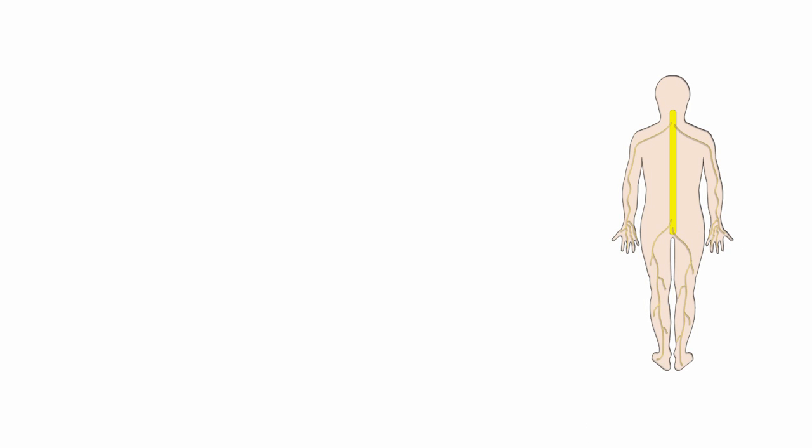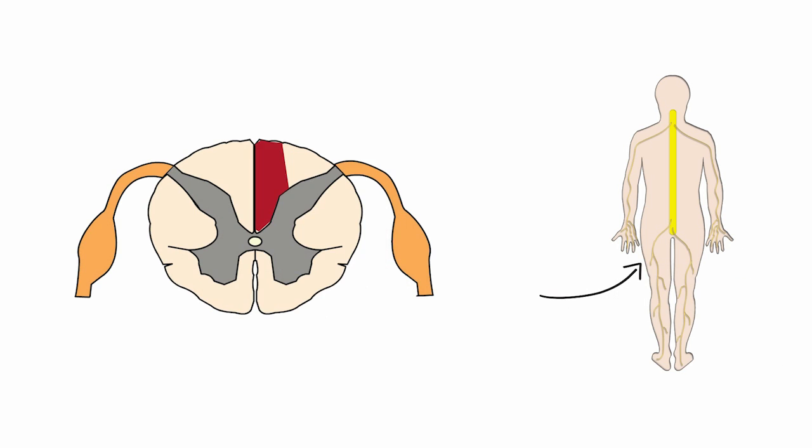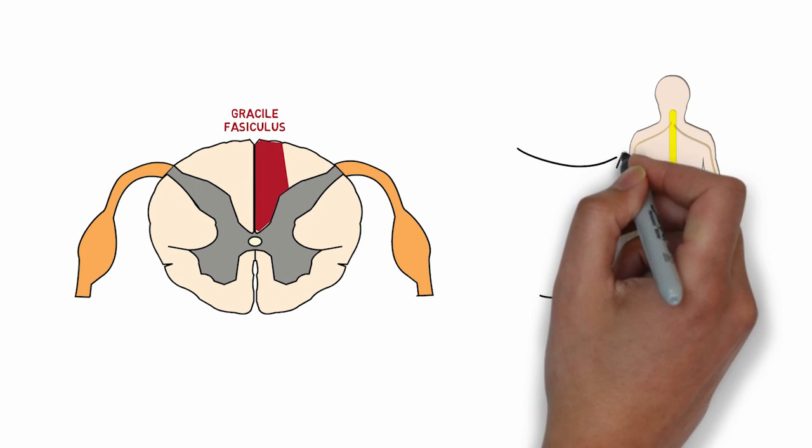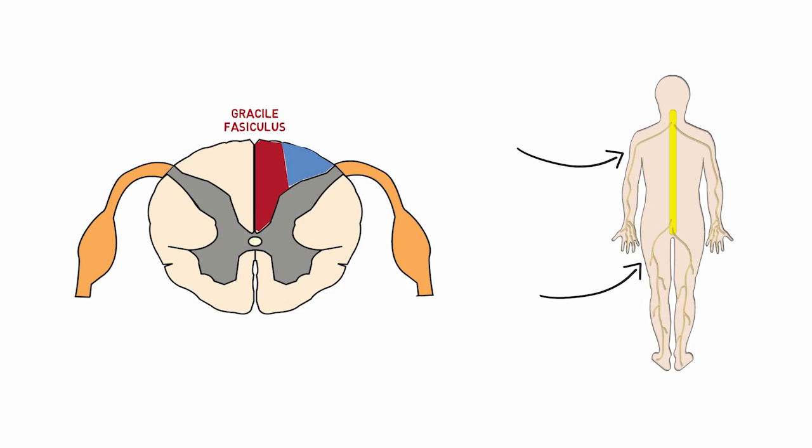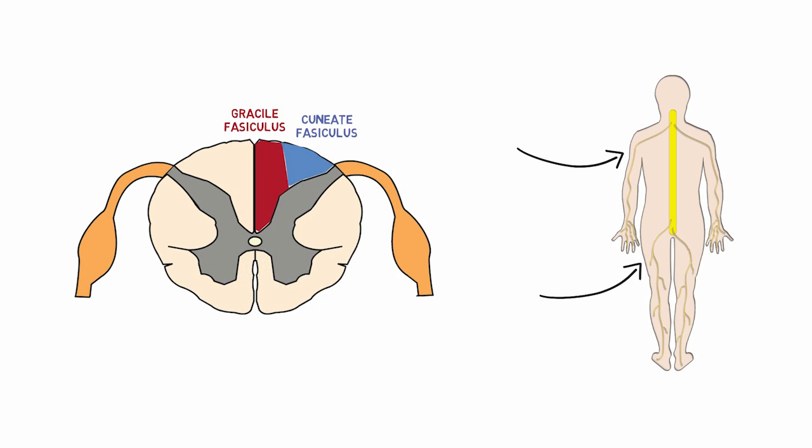One important thing I would like to mention here is that the nerve fibers which carry the sensory information from the lower part of the body are more medially located in the dorsal column pathway and these are known as the gracile fasciculus, and the fibers which carry the information from the upper part of the body are more laterally located and known as cuneate fasciculus.